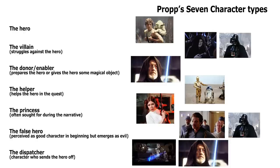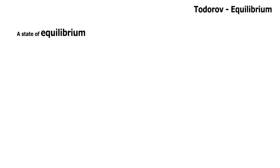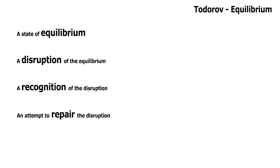So there are Propp's seven character types, and we can relate this to many mainstream films. Our next theorist is Todorov, who suggested that conventional narratives are structured in five stages. These start with a state of equilibrium, where all is normal. Then there's a disruption of the equilibrium. Then there's a recognition by the main characters of this disruption. Then there's an attempt to repair the disruption — often the main bulk of the story — after which there's a reinstatement of the equilibrium, where all is back to normal.